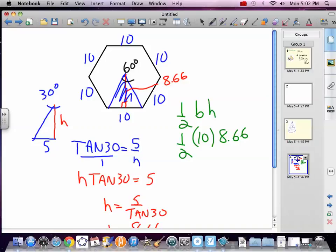One-half times ten times 8.66, 43.3. We've got six of those, times six, times six, 259.8. So our hex is 259.8.